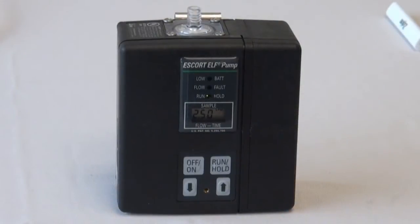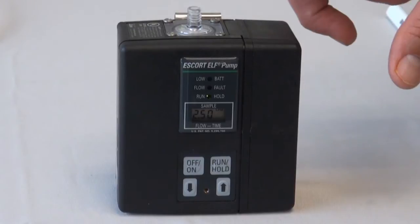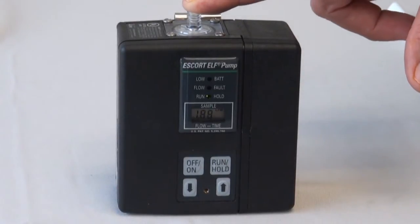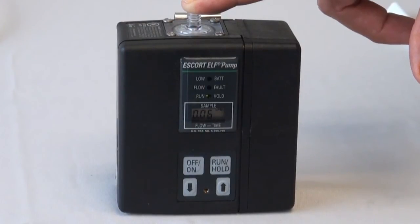Allow the pump to operate for 10 to 15 minutes at 2.5 liters per minute. To check for leaks, temporarily block the pump inlet. The LCD display should be at 0.02 liters per minute or less.